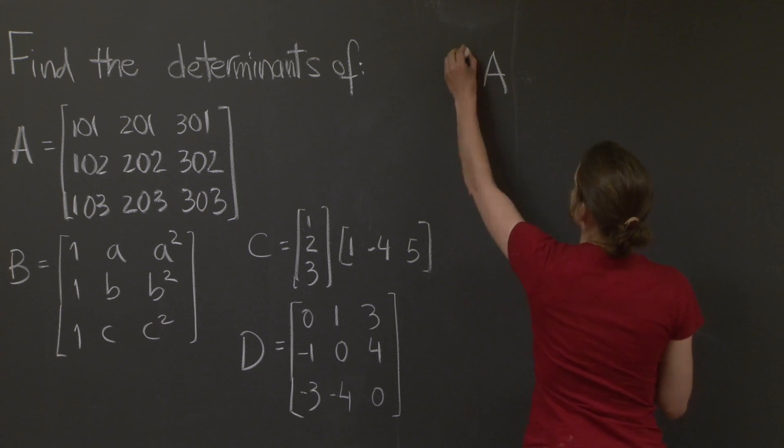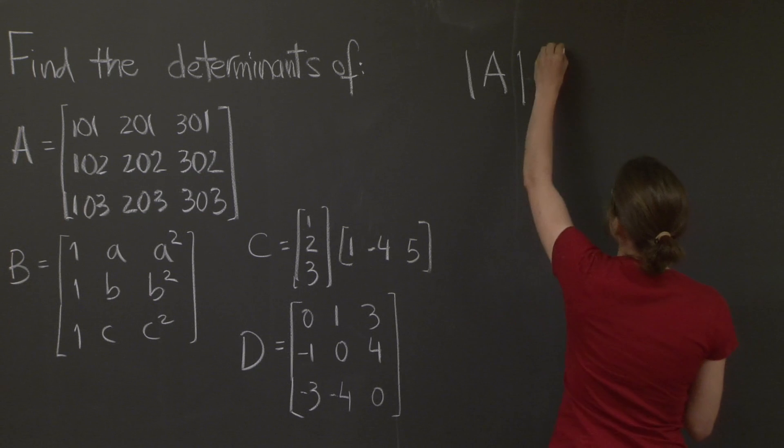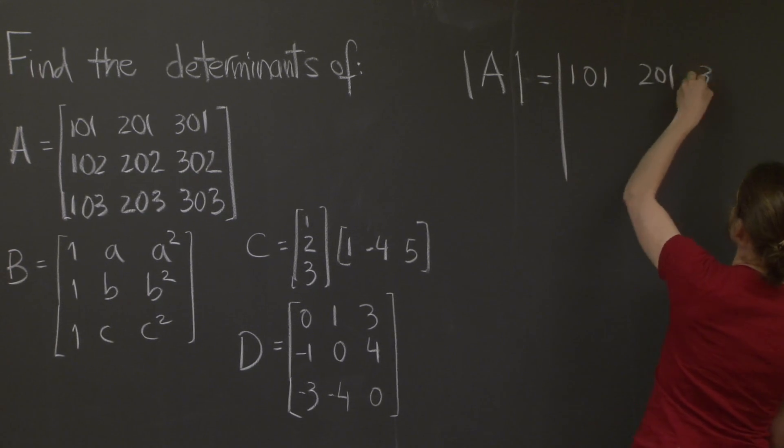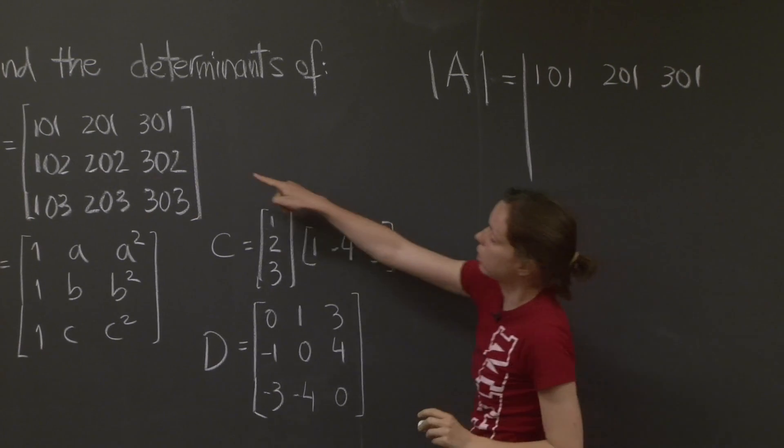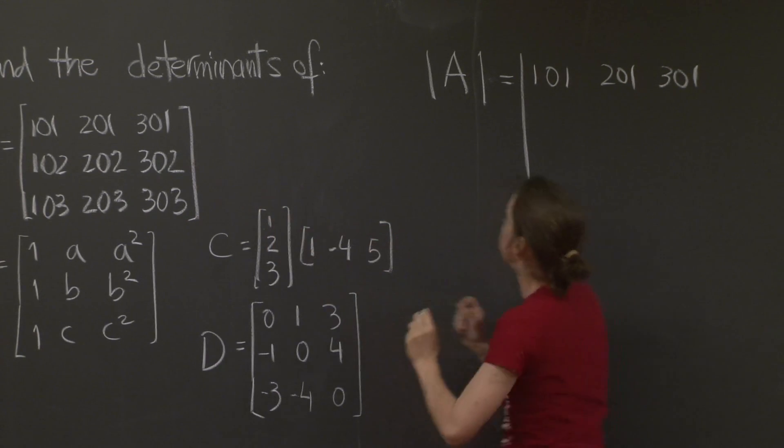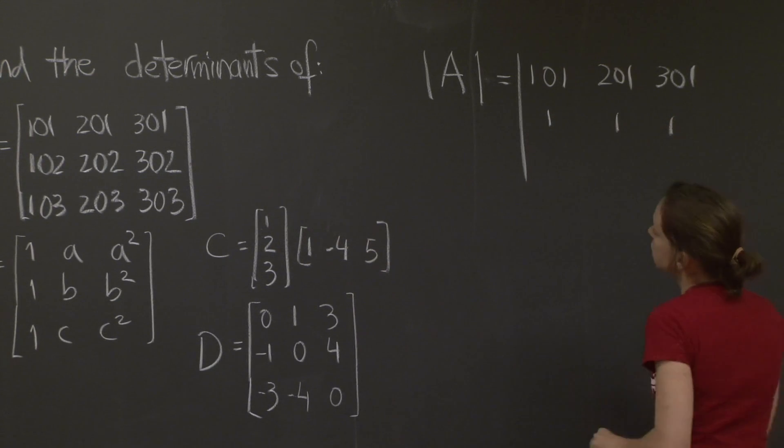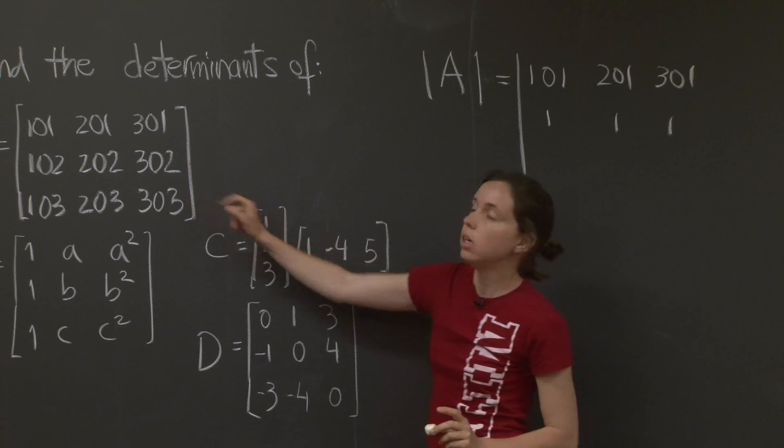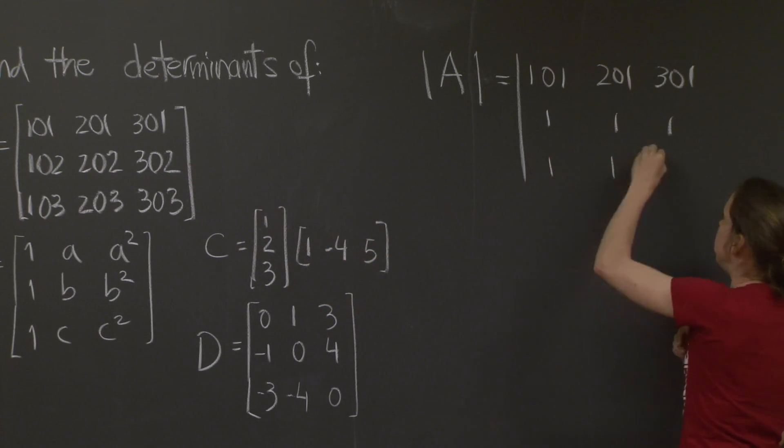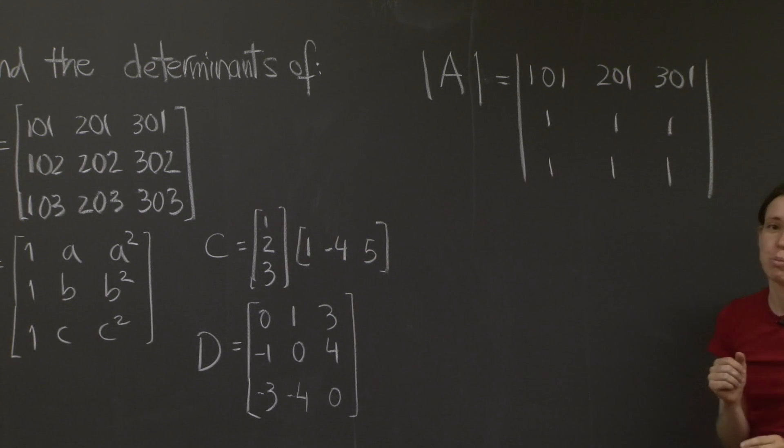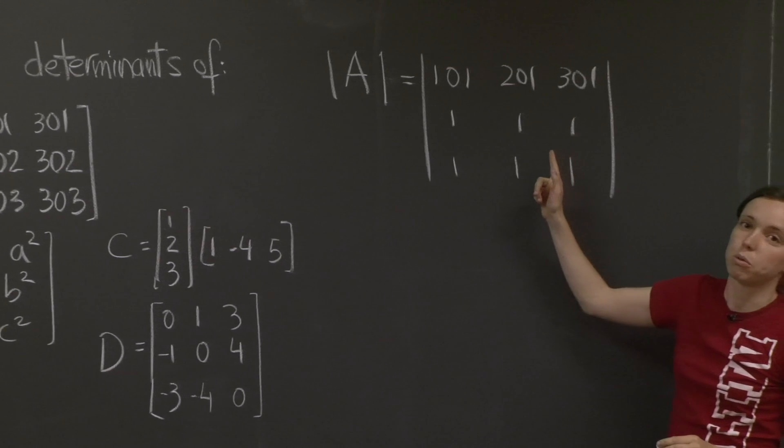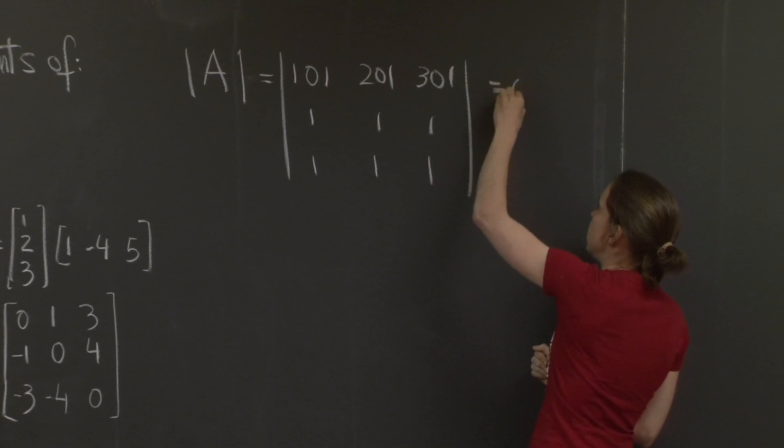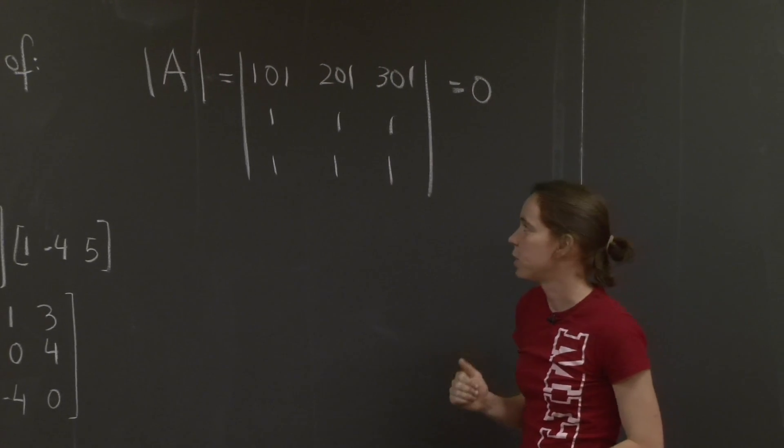So let's do determinant of A is equal to 101, 201, 301. And then if I subtract off the first row from the second one, I'll get 1, 1, 1, which is very convenient. And actually, if you subtract the second row from the third one, you'll get 1, 1, 1. Here's the property of the determinant. If you have two equal rows on your matrix, the determinant is automatically equal to 0. All right. All done with one of them.